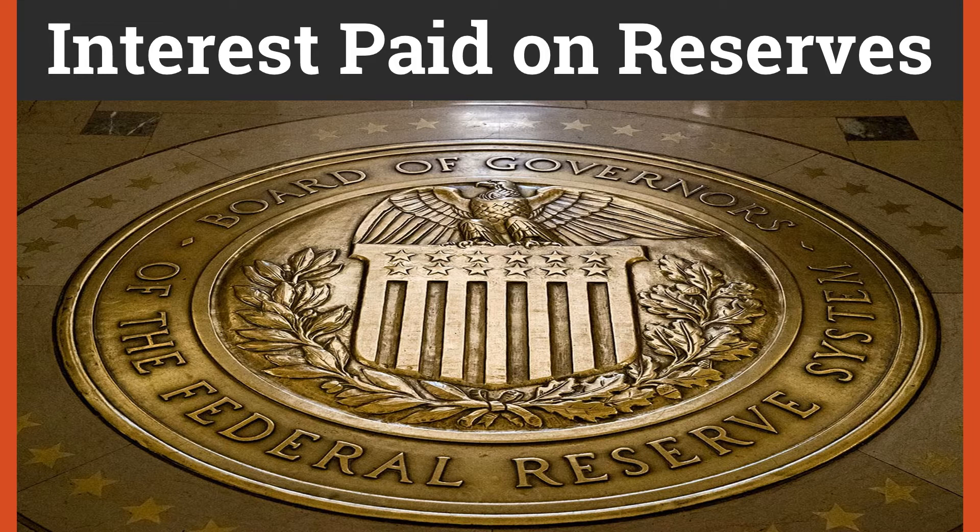First up is interest paid on reserves. As interest paid on reserves goes up, banks will hold on to more money — they are getting paid to hold on to money, and thus the money supply will decrease. So if the Federal Reserve would like the money supply in the economy to decrease, they could increase the interest paid on reserves.